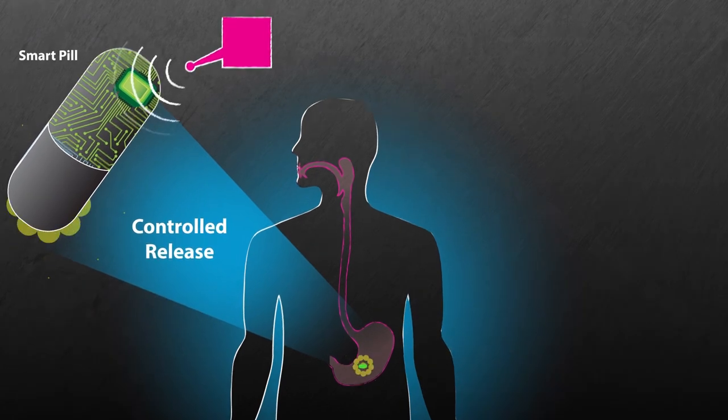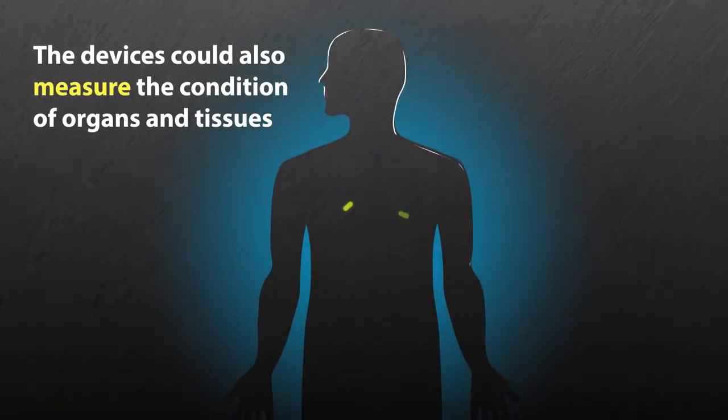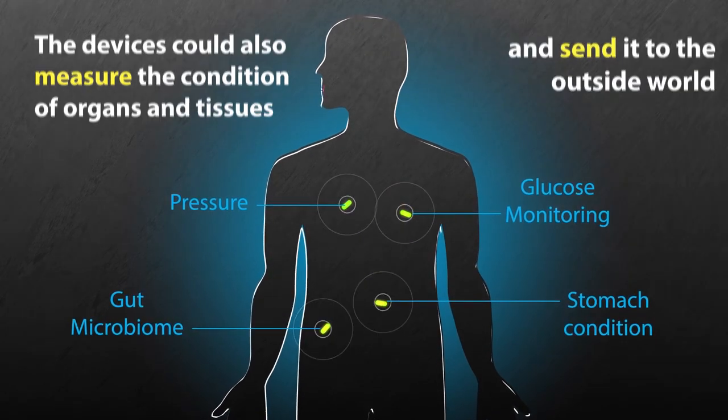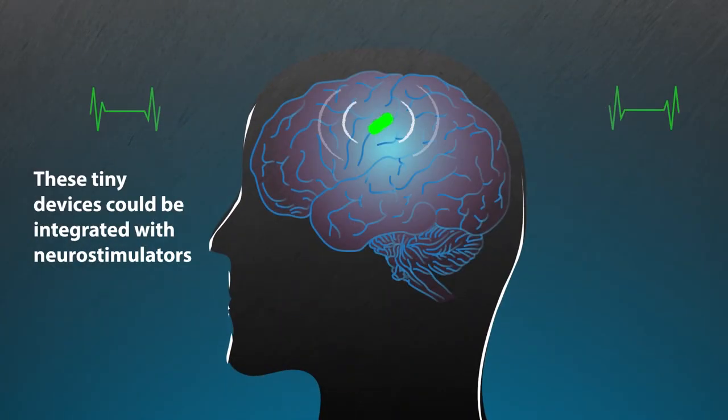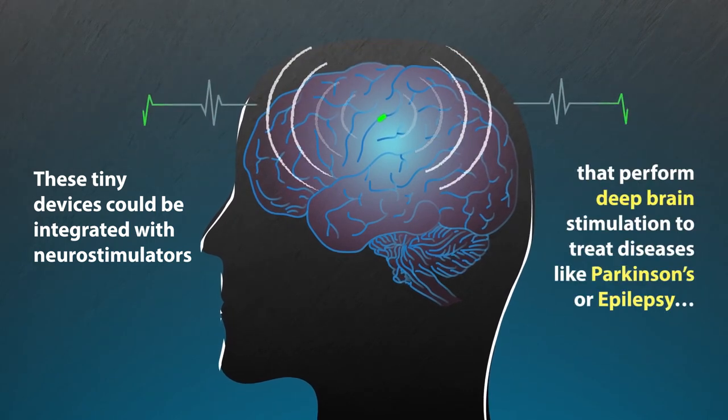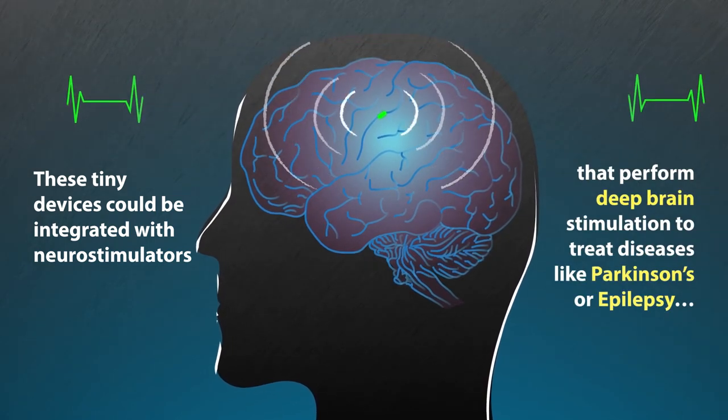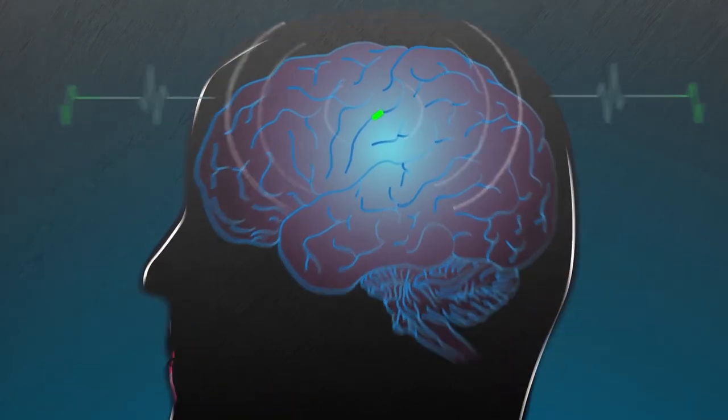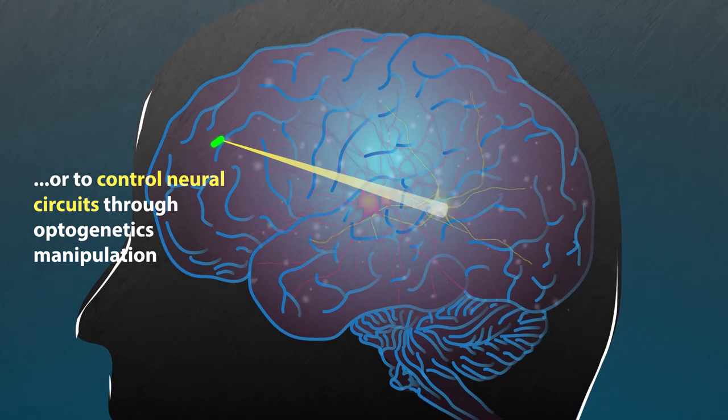The devices could also measure the condition of organs and tissues inside the body and send it to the outside world. These tiny devices could be integrated with neurostimulators implanted inside the brain to perform deep brain stimulation to treat diseases like Parkinson's or epilepsy, or to control neural circuits through optogenetics manipulation.